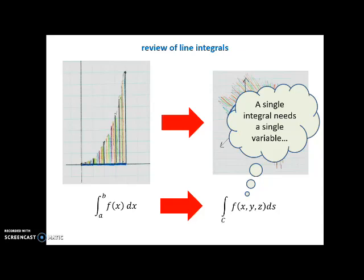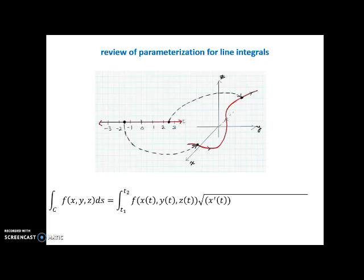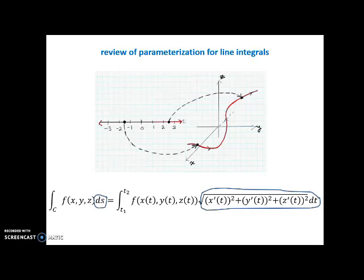So what did we do? We parameterized. We assigned a function of t to each point on the curve. In other words, x is a function of t, y had to be written as a function of t, and z had to be written as a function of t. That way, we could change our line integral into an integral in terms of t, and then it becomes just like a regular single variable integral. Notice that ds, the instantaneous change along the curve, became the square root of the sum of the squares of the derivatives times dt. And then we just replaced x, y, and z in the integrand with their equivalents in terms of t.